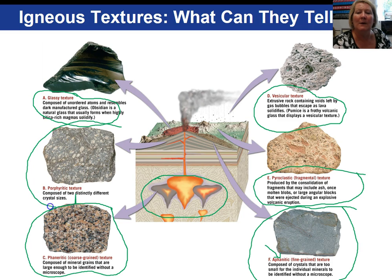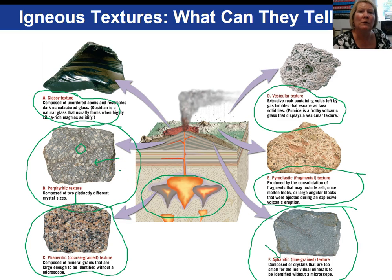Our last texture is a porphyritic texture — that's an in-between texture. You have large crystals that formed while the magma was cooling slowly; we call those phenocrysts. Then there is a fine-grained matrix or groundmass after the magma has moved up closer to or out onto the earth's surface and cooled very rapidly, so the mineral crystals are too small to be seen with the eye. So we have two distinct crystal sizes for a porphyritic texture.